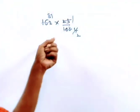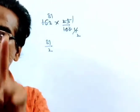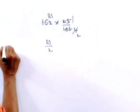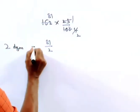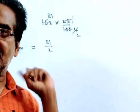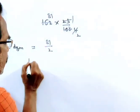That means, this 81 by 2 is the reduced price of 2 dozen X. 2 dozen X reduced price of 2 dozen X is 81 by 2.